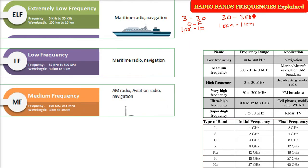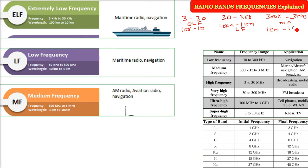Then we have the Medium Frequency (MF), which starts from 300 kilohertz and goes up to 3 megahertz. Megahertz is 10 to the power 6. The applications include AM radio, aviation radio, and navigation. The wavelength ranges from 1 kilometer to 100 meters — to give you a sense, 100 meters is the distance Usain Bolt runs, and that is the size of one wavelength, the distance between two crests or two troughs.